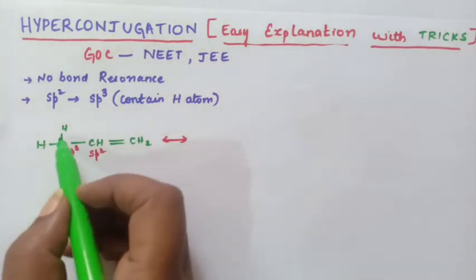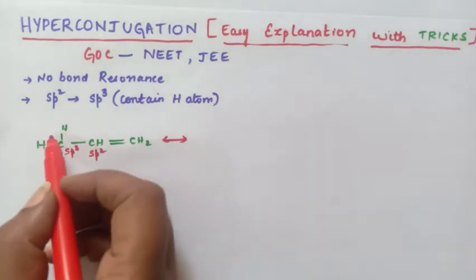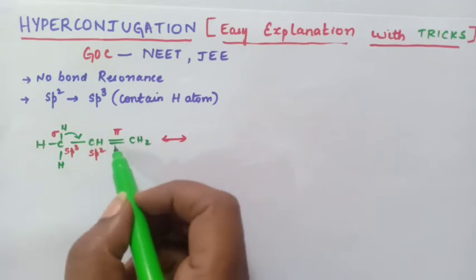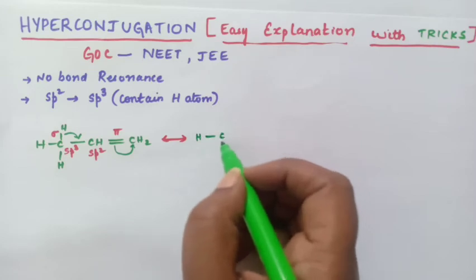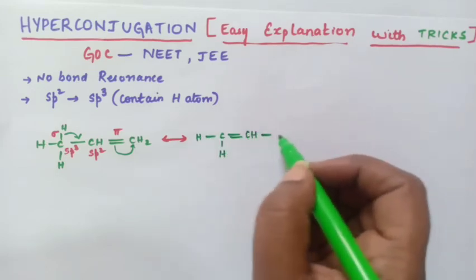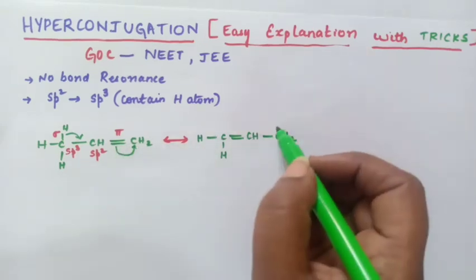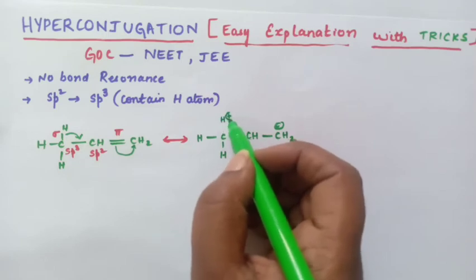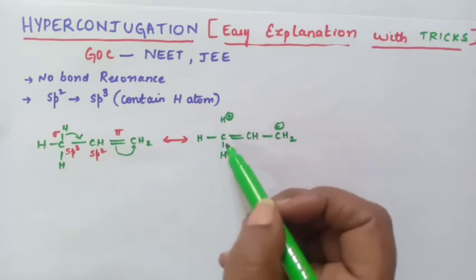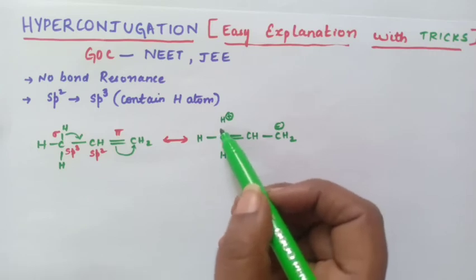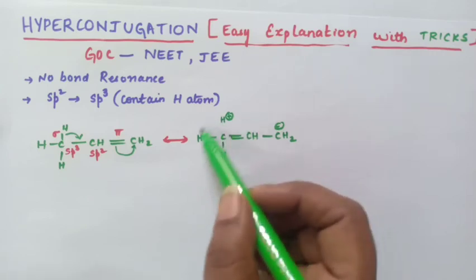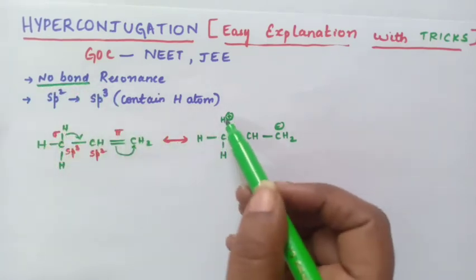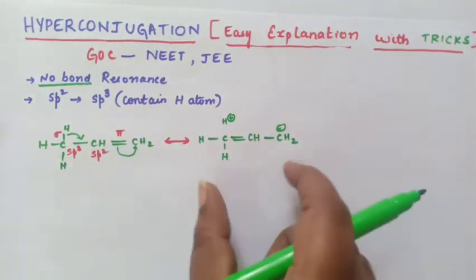Now what happens is this bond — we call it as sigma bond — and this will be the pi bond. The sigma bond will shift here and this pi bond will shift here. As a result, you will be getting a double bond here, single bond here, and then this electron has shifted to this carbon, so you will get a negative sign over here. The hydrogen atom which has given away the electron will be present here as H plus, close to the molecule. You can see there is no bond between hydrogen and carbon, but still it stays close to the molecule because of the attraction. That is why it is called as no bond resonance — even though there is no bond, the hydrogen ion stays close to that of the carbon atom. This is one resonating structure.